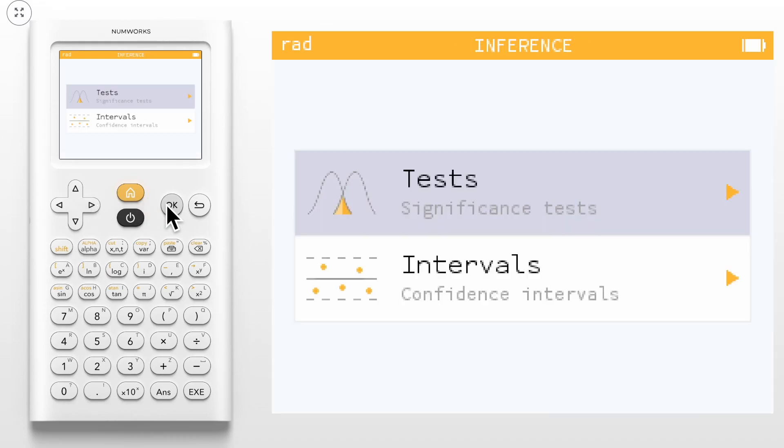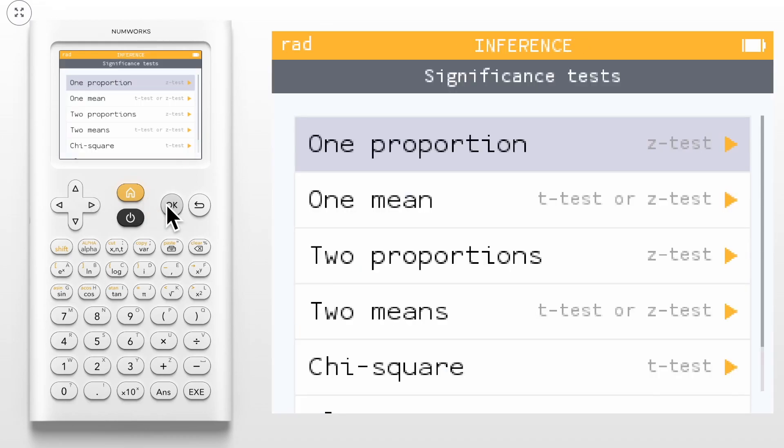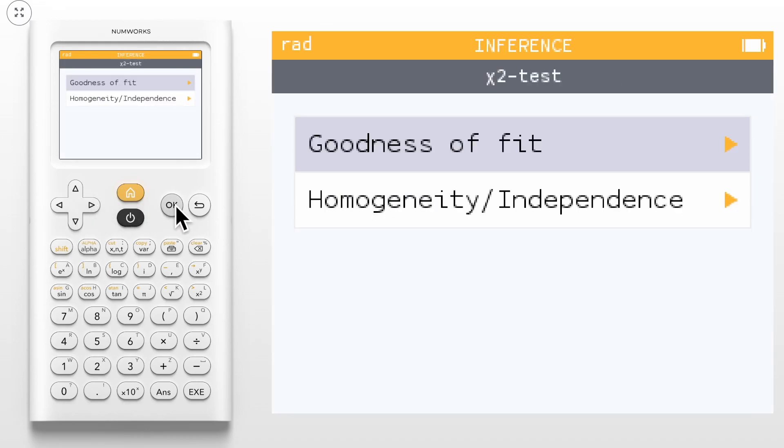To begin, enter the Inference app and select Test. Select chi-squared and then goodness of fit.